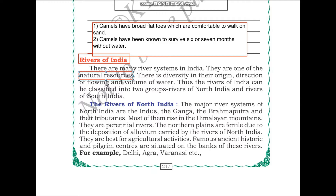There is diversity in their origin, direction of flowing, and volume of water. Diversity is a word you will see very often, especially in science — it means variety. So there is a whole range of possibilities of origin, direction of flowing, and volume of water in the rivers. Thus, the rivers of India can be classified into two groups: the rivers of North India and the rivers of South India.